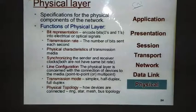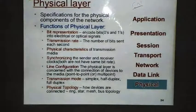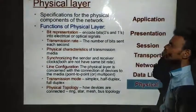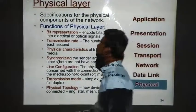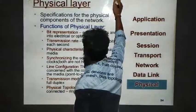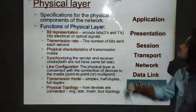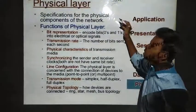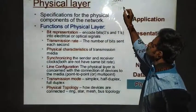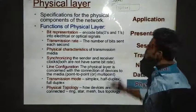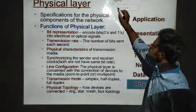The physical layer is responsible for transmitting data in the form of raw bits — this is the major responsibility of the physical layer. Whenever we receive data from the data link layer, the data link layer handles data in the form of frames. But the physical layer sends the data as raw bits, meaning those frames are divided into raw bits like 1s and 0s.